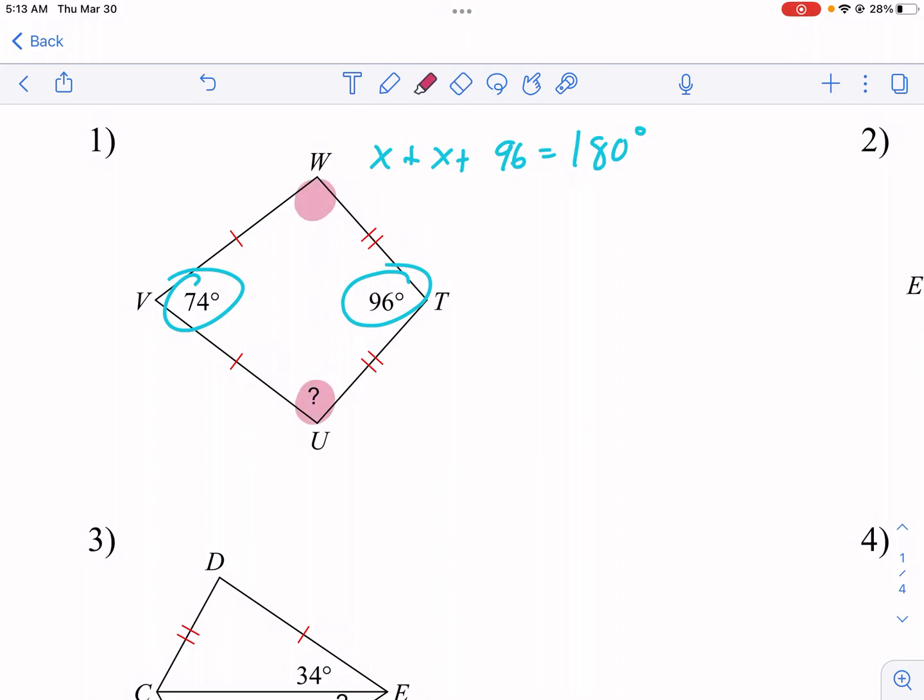So this whole angle right here and that whole angle right there are equal. So we can remodify our equation so that we have this question mark, or I'll call that angle u, plus angle w, plus 74, plus 96. What happens if you add all four angles in a quadrilateral? It equals 360. That's one of the angle properties. Now we know that angle u and w are the same though, so we could rewrite this.